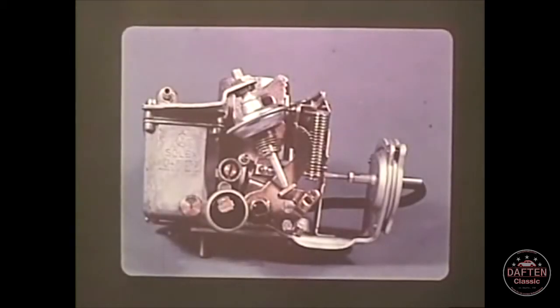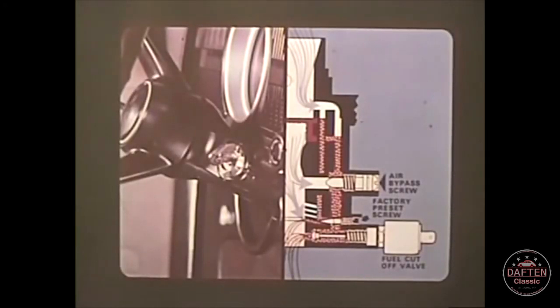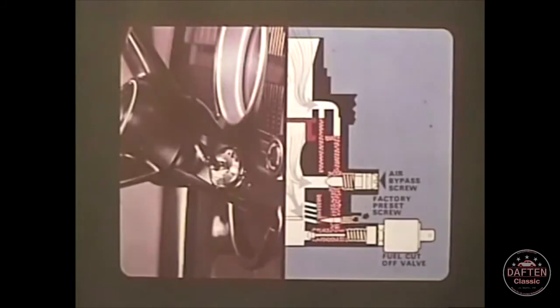That brings us up to the 34 PICT-3, the carburetor found on 1971 models. Its functions are the same as those of the 1970 carburetor. The important difference, aside from its larger size, is the relocated air bypass screw and the fuel cutoff valve. When the ignition is switched on, the fuel cutoff valve is held open and the idle fuel air mixture can reach the engine. When the ignition is switched off, the valve closes and no fuel can reach the engine.